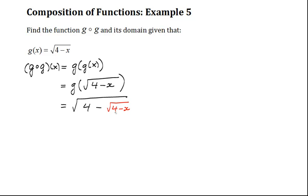Now we need to find the domain. There are going to be two restrictions. For the first restriction, we have that 4 minus x has to be greater than or equal to 0. Therefore, x must be less than or equal to 4. That's our first restriction.